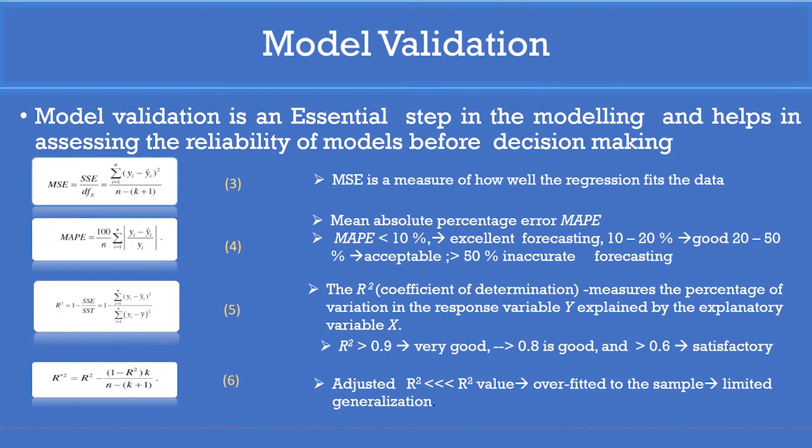If the R square value is greater than 0.9, the model is very good and fits the data very well. If R square is greater than 0.8, the model is good. If R square is greater than 0.6, the model is satisfactory.